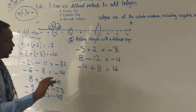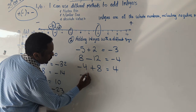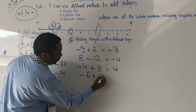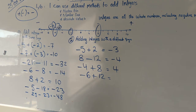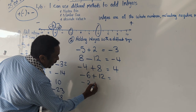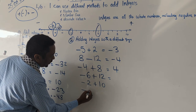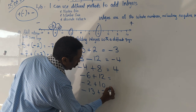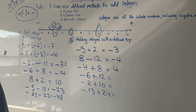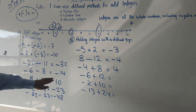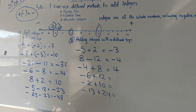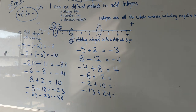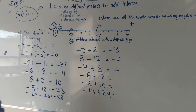Let's do some more examples. If we have minus 6 plus 12, minus 2 plus 10, and minus 13 plus 24 — answer these three questions. For minus 6 plus 12: the small number is carrying the negative, so the answer is 6. For minus 2 plus 10: it's the same as 10 minus 2, which is 8. So the answer is 8.